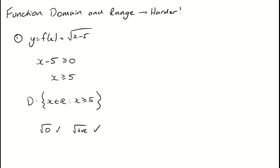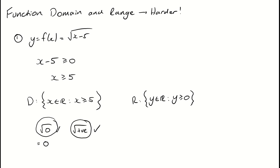Now looking at the range, the range isn't going to change. The range is such that y is a real number where y is greater than or equal to 0. If we put in 5, we get the square root of 0, which is 0 — our absolute limit in the range. Any number bigger than 5 gives a positive result. So our range doesn't change between √(x−5) and √x; the range is the same but the domain shifted.